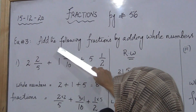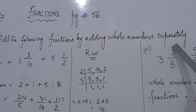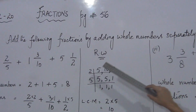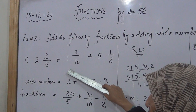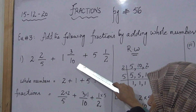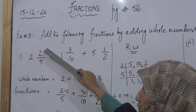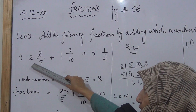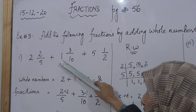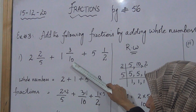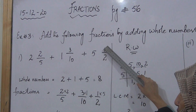Exercise number 3 says: add the following fractions by adding whole numbers separately. We have fractions to add. The number is written in the form of a mixed number. For example: 2 whole 2 upon 5, plus 1 whole 3 upon 10, plus 5 whole 1 upon 2.